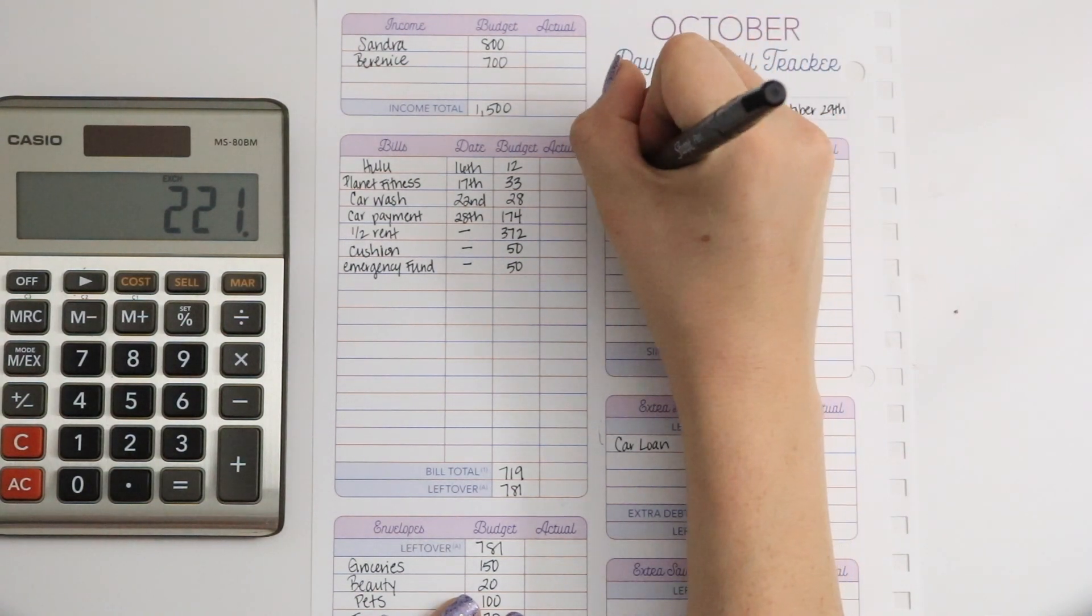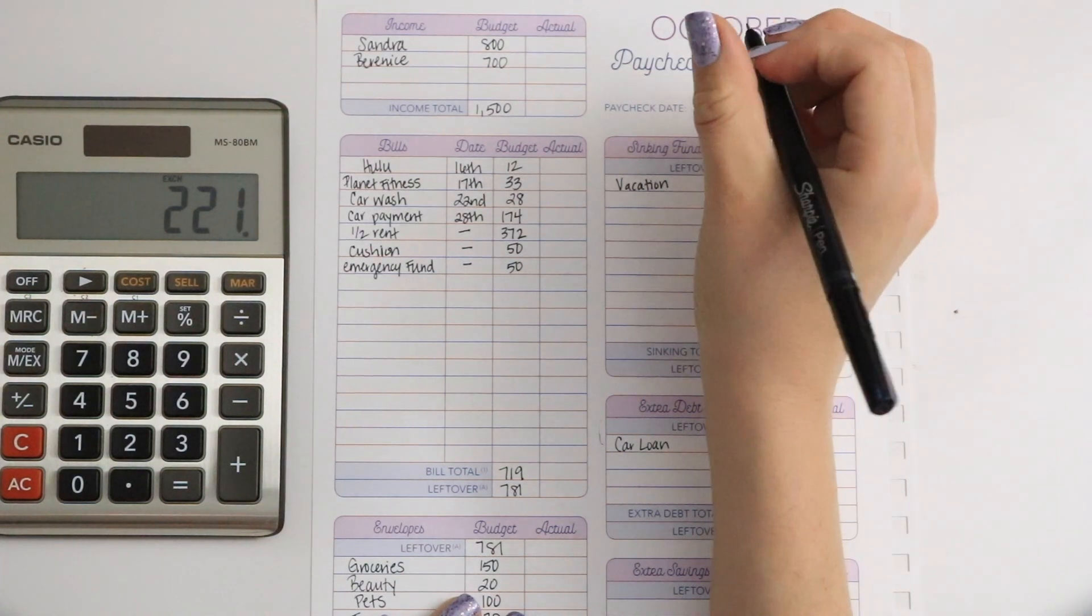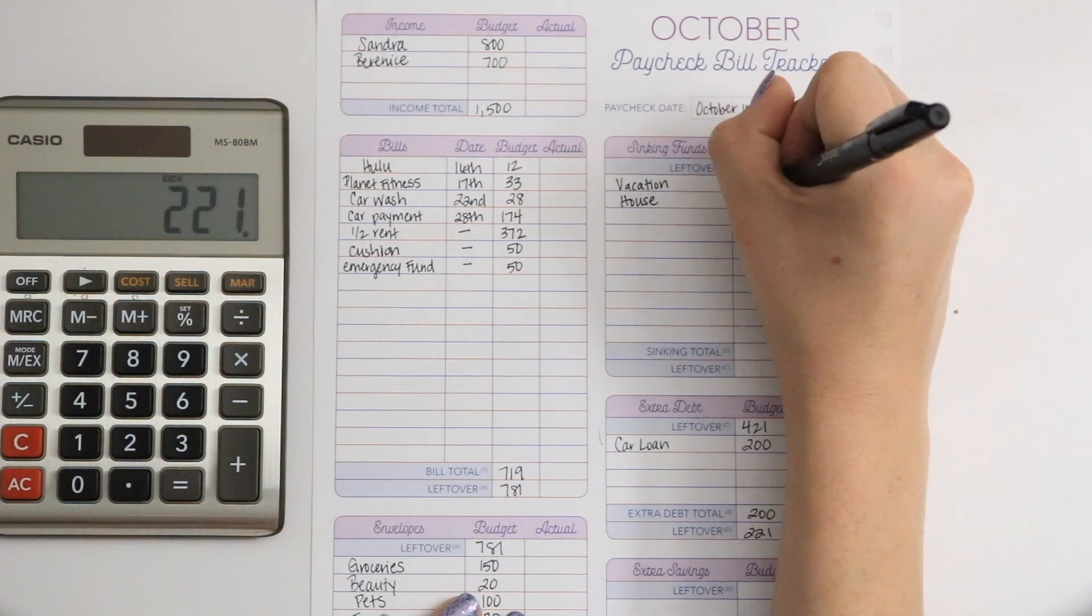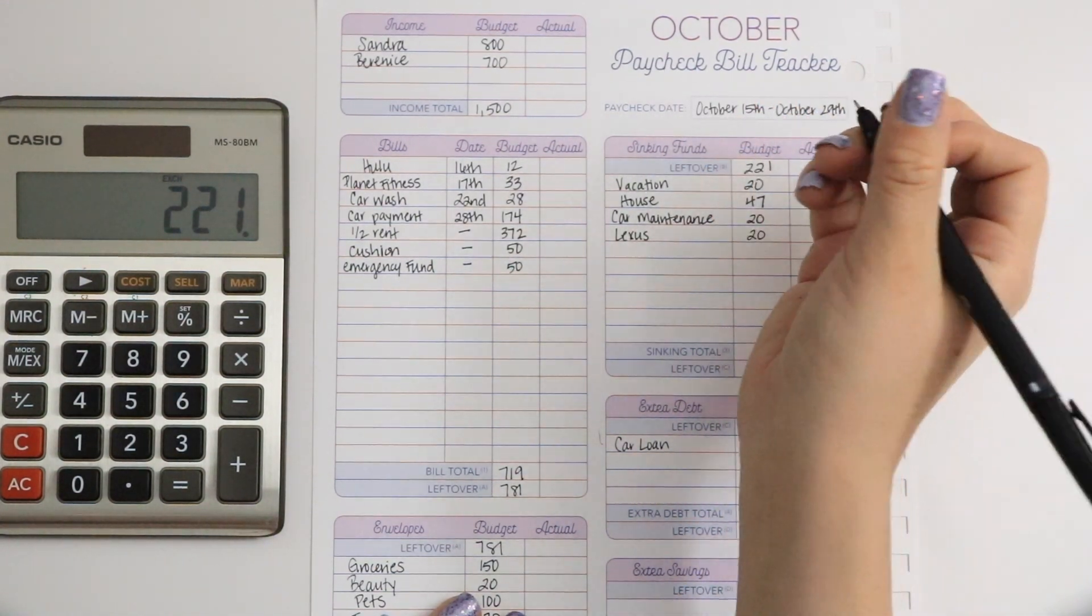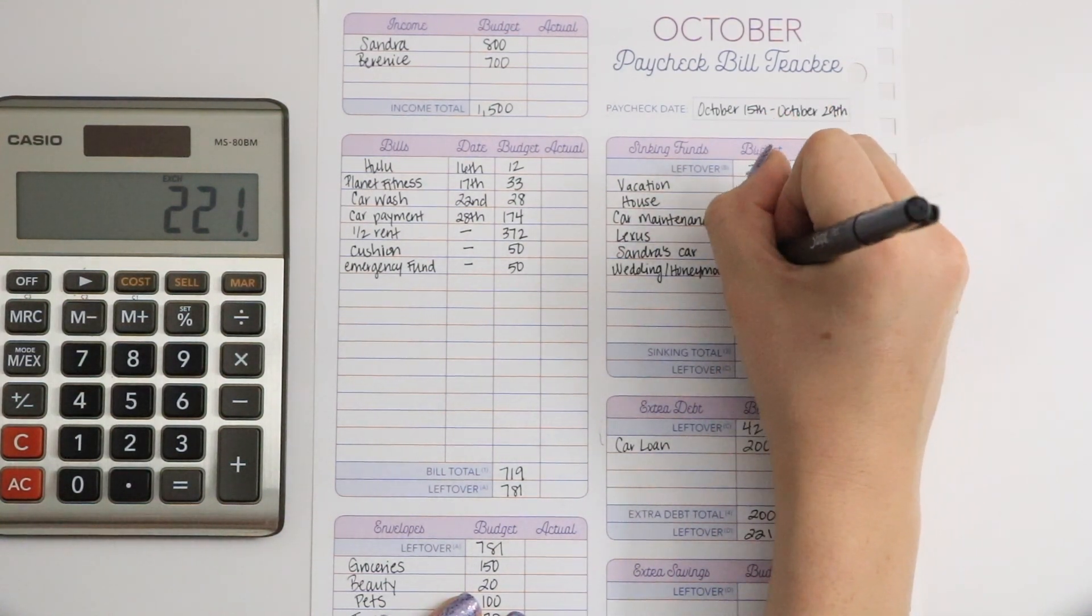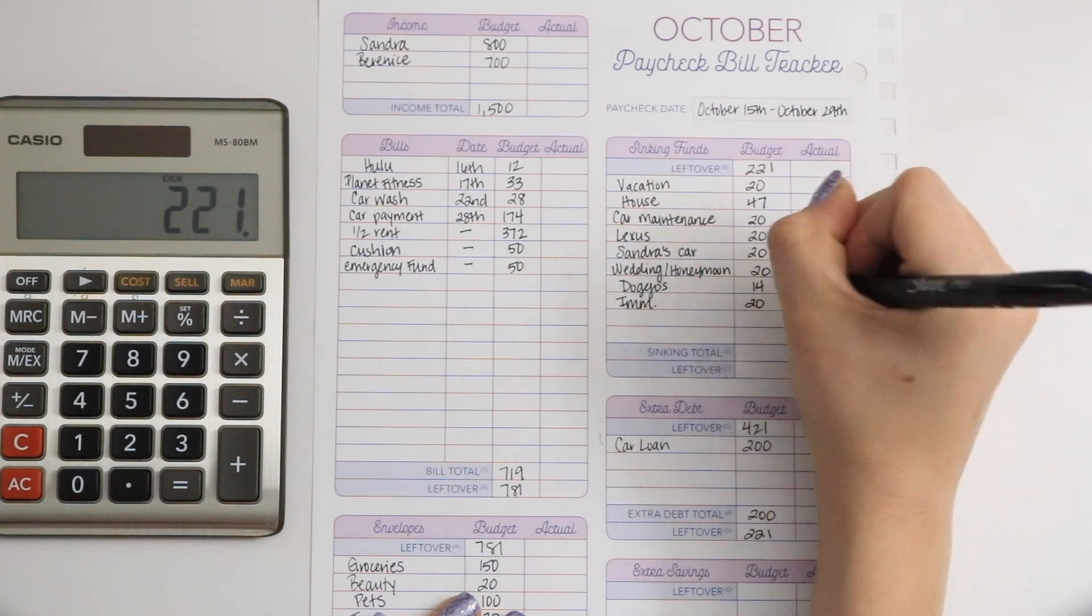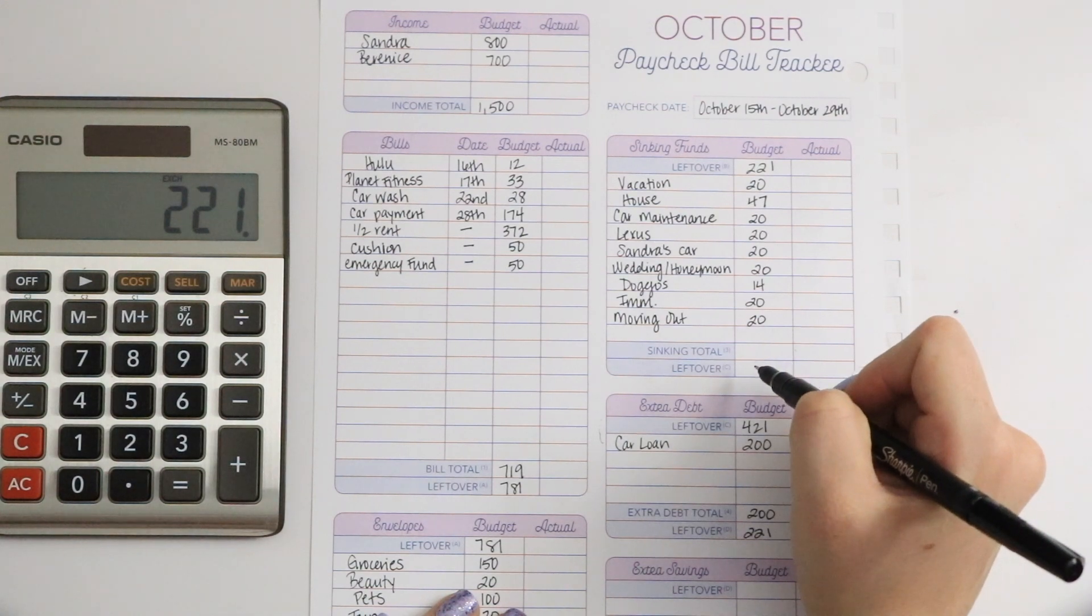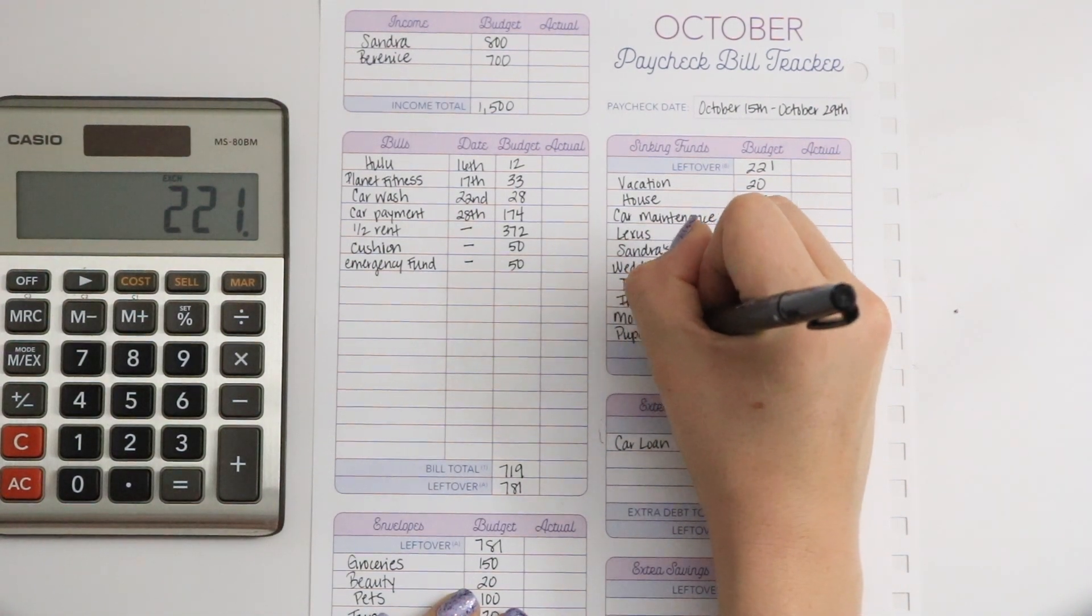$221. So vacation, I'm adding 20. House, I'm adding 47. Car maintenance, I'm adding 20. For my Lexus repairs, 20. Sandra's car, 20. Wedding and honeymoon, I'm adding 20. Doggos is 14. I am M, 20. Moving out, 20. And I am adding a new sinking fund, which is my pup's emergency fund.